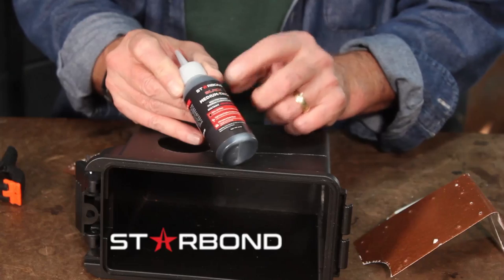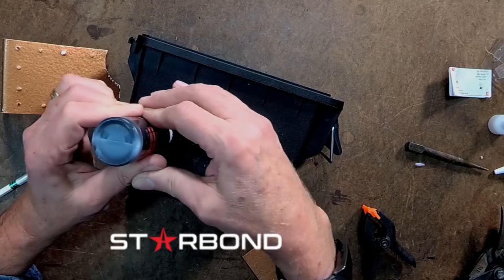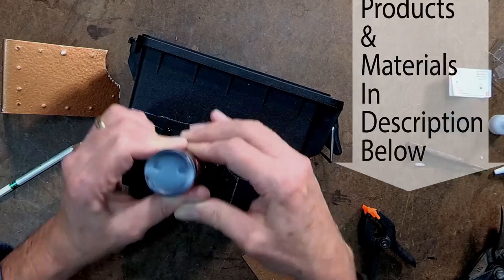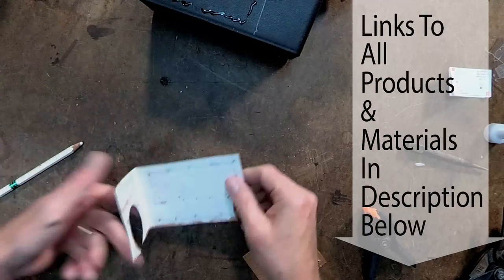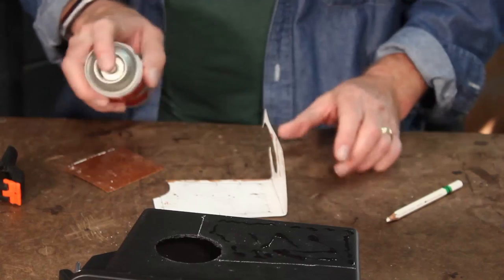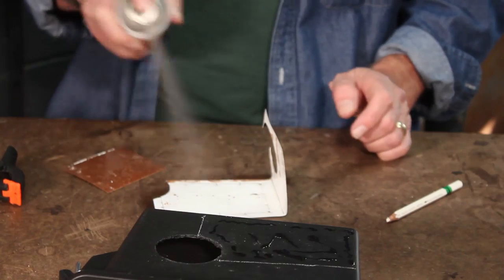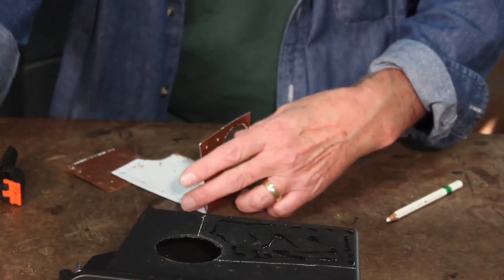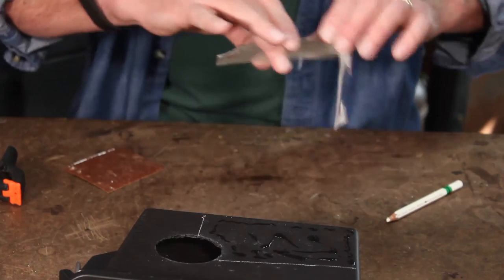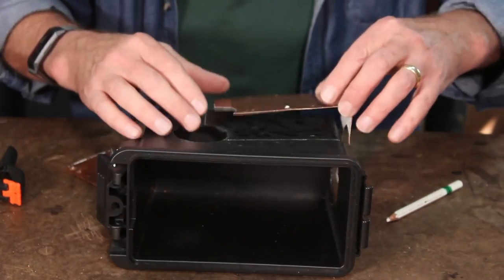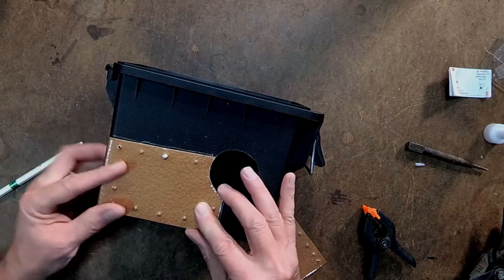Marking where these go, I'm now going to use some Starbond. Now, Starbond is great, it's like super glue on steroids. I'll put a link down below to this product. After you've applied your glue, you come on and spray the accelerator on there, and it really helps to make a fast, quick bond.